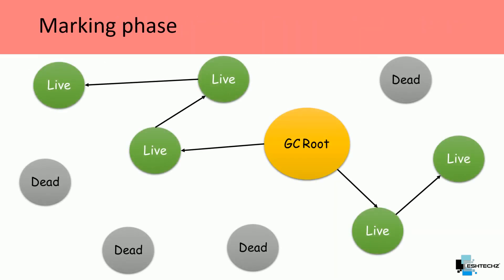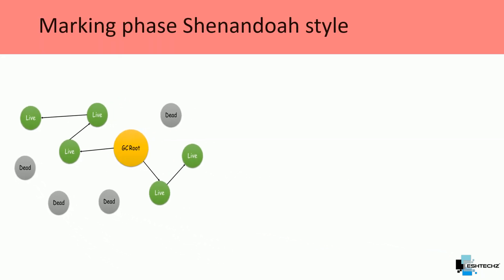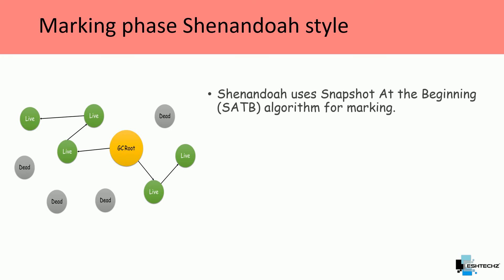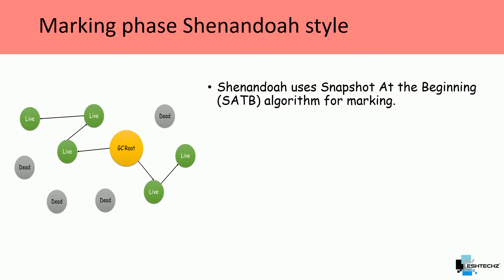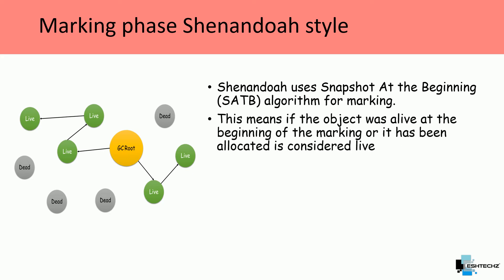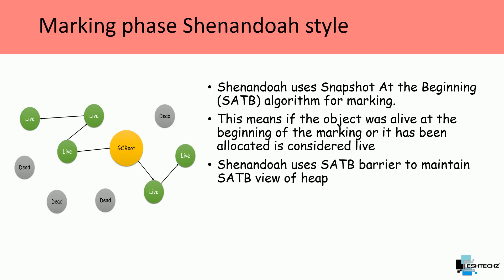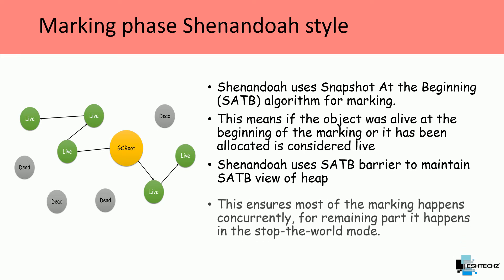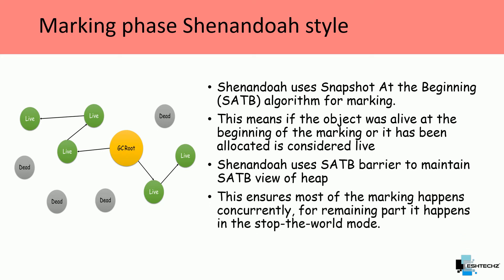In the marking phase, Shenandoah uses the SATB — Snapshot At The Beginning — algorithm. This means objects alive at the beginning of marking, or allocated since, are considered live objects. Shenandoah uses an SATB barrier to maintain the SATB view of the heap, ensuring most marking happens concurrently. For the remaining part, it happens in stop-the-world mode.